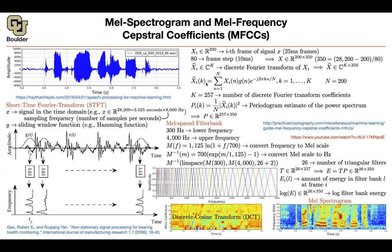So I understand the mel-spectrogram, but for the mel-frequency cepstral coefficients, is the only difference that I replace my DFT with a DCT and do the exact same thing? No — you still follow all of these steps. You do STFT, then create your filter banks, compute your mel-spectrogram, make sure you take a log to get a log mel-spectrogram, and then do a discrete cosine transform to give you these coefficients. So it's just one extra step.